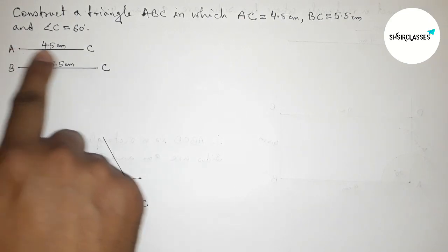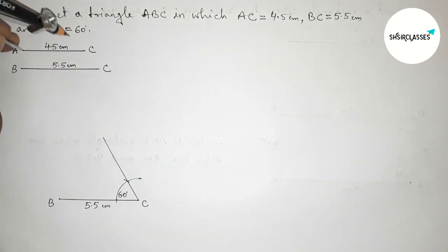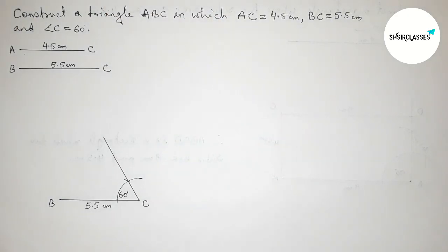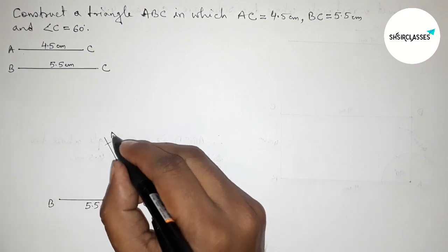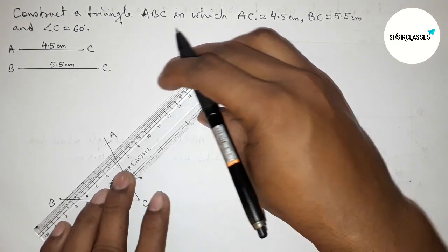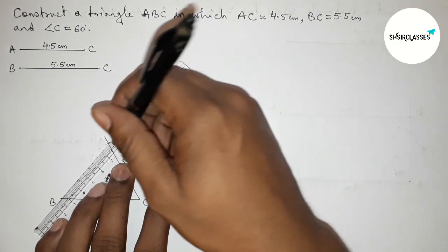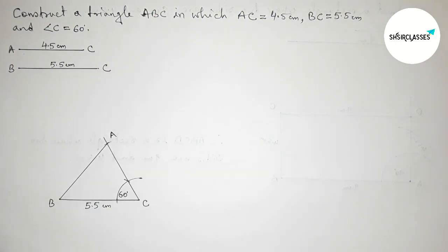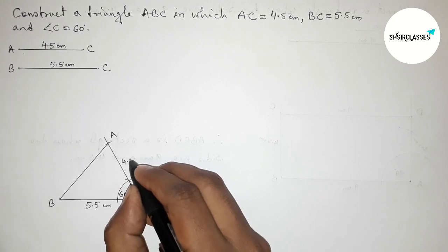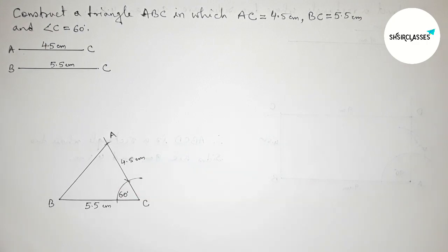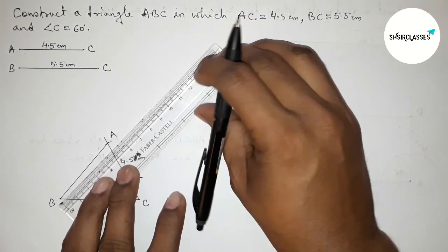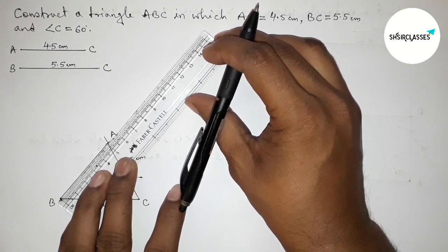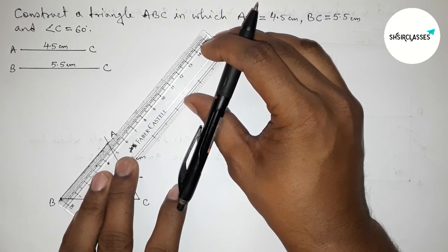Now taking the length AC equals 4.5 centimeters with the compass. Putting the compass on point C and cutting to mark point A. Joining side AB to complete triangle ABC. This side is 4.5 centimeters. Now measuring the length of AB with the scale.